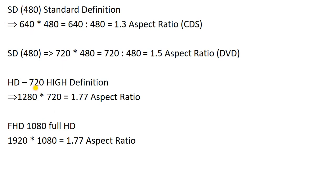After SD, HD came. You know very well what HD is — you may be playing this video in 720p. HD stands for High Definition, and HD device pixels are 1280 in width and 720 in height. Its aspect ratio is 1.77: 1280 divided by 720 gives us 1.77.